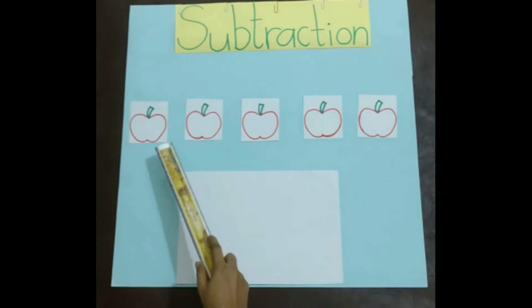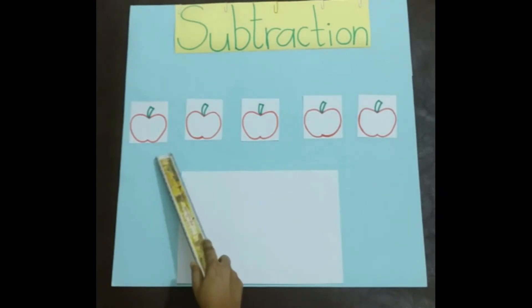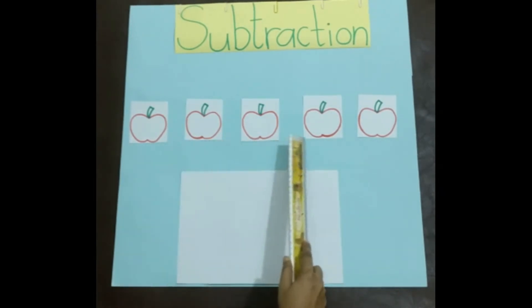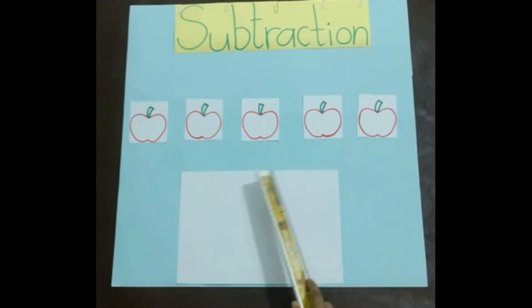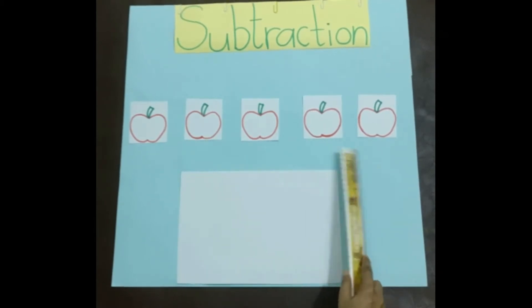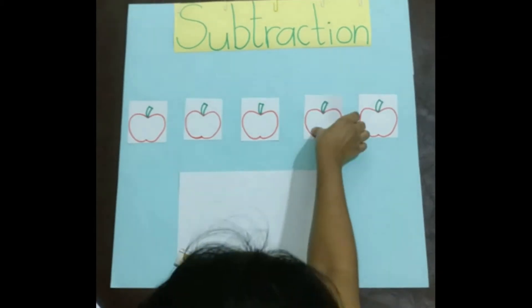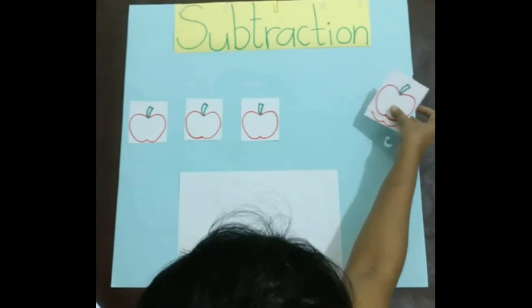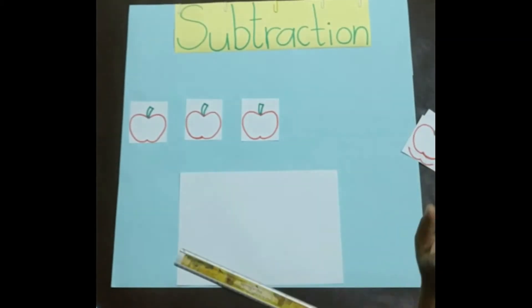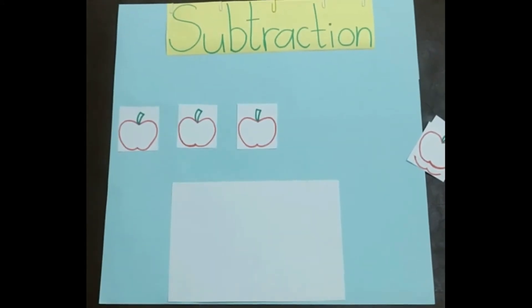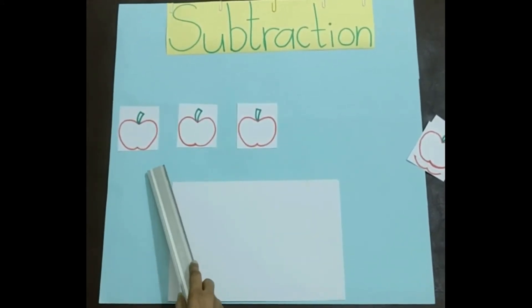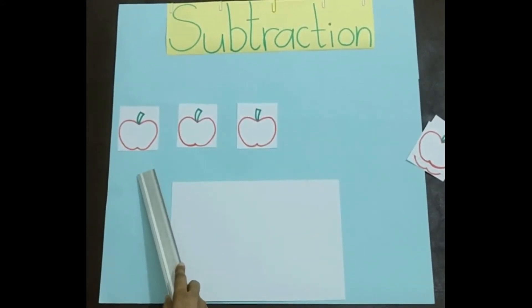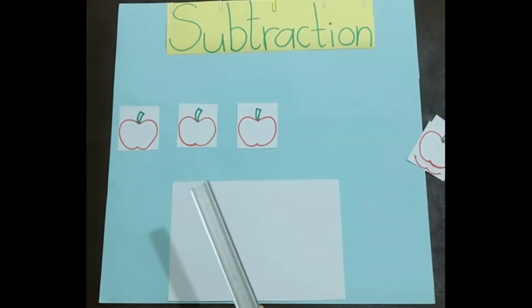We have a total number of five apples — one, two, three, four, five. You give two apples — one, two — to your friend. How many apples are remaining with you? You are left with one, two, three. You have three apples now.